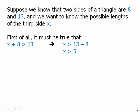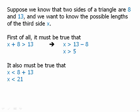And notice that 5 is the difference of 8 and 13. It's also true that the sum of 8 and 13 must be greater than that third side. So it means that x has to be less than 21. Notice that's the sum of the two sides. So we can say that x must be greater than 5 and less than 21. That's the allowable range for x. And in particular, notice that it is greater than the difference of the sides and less than the sum of the sides.